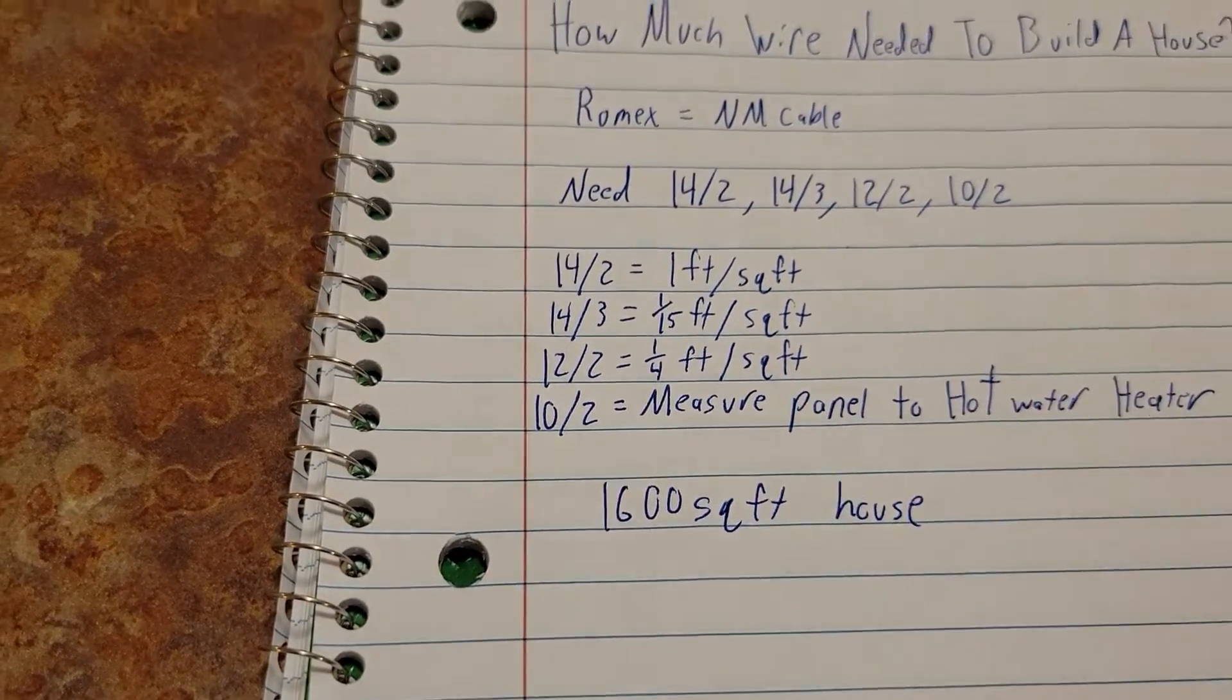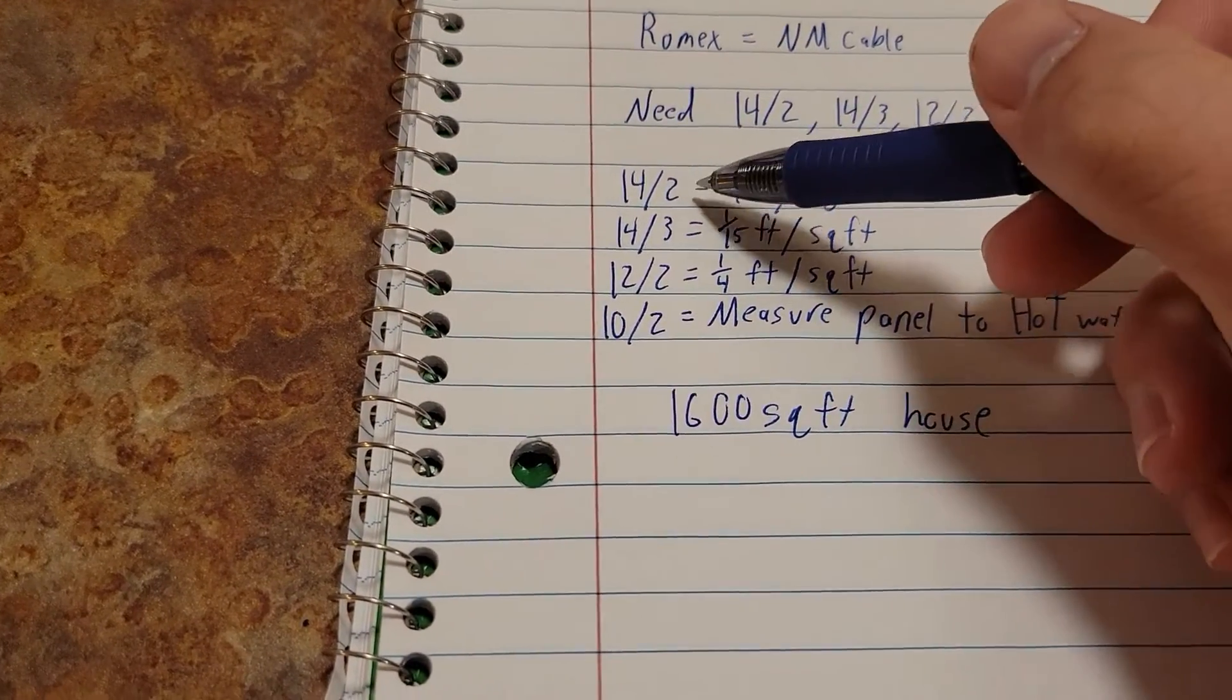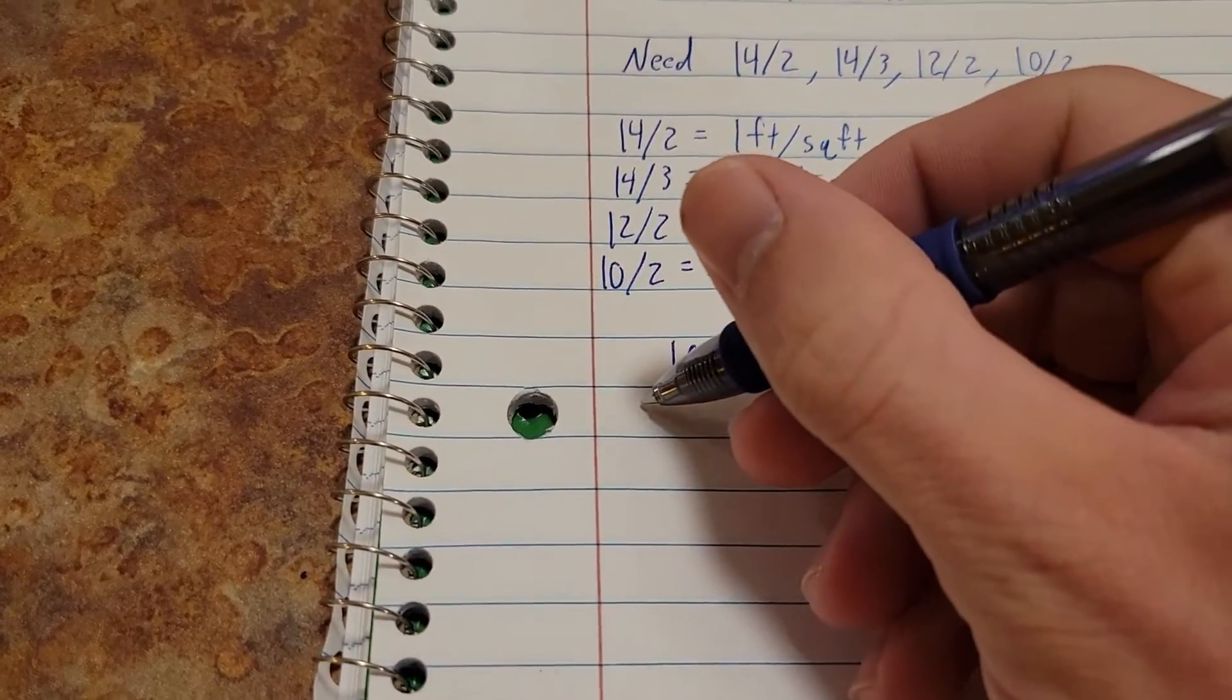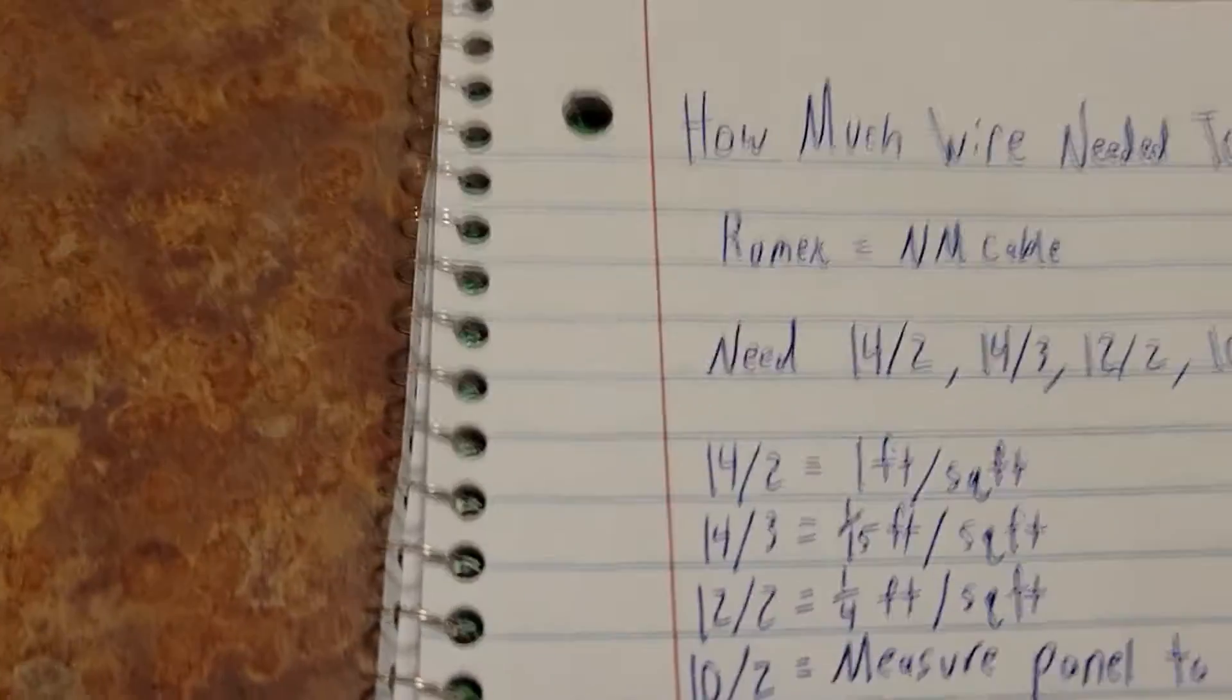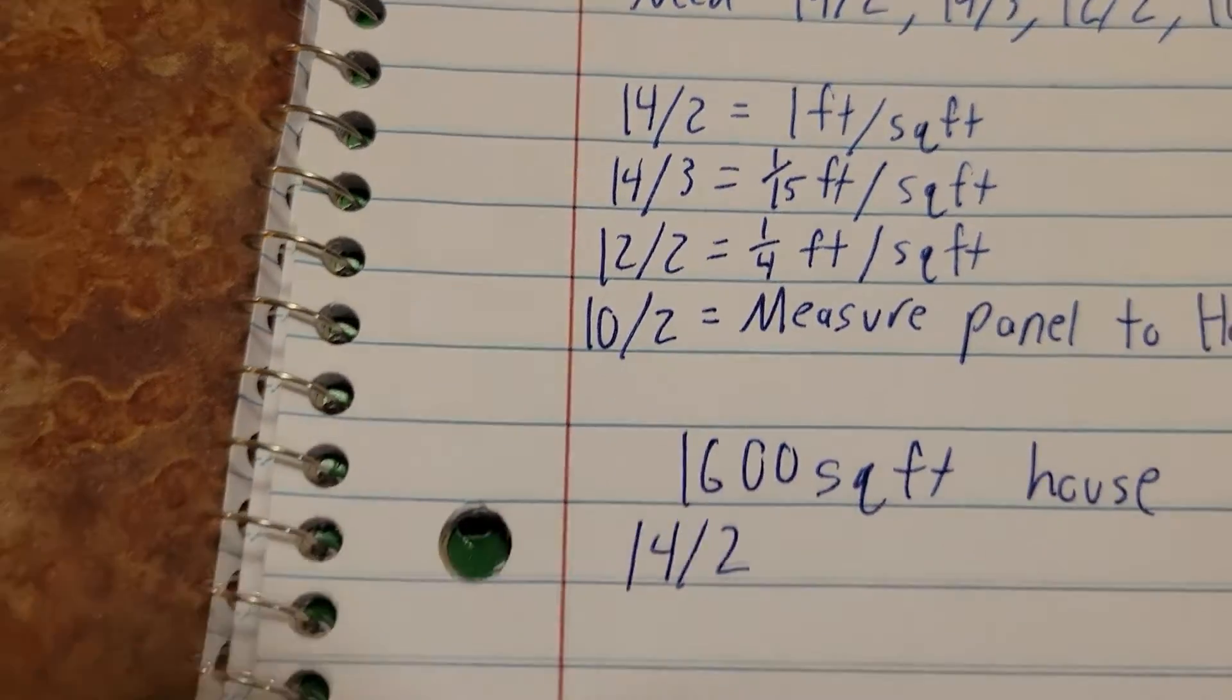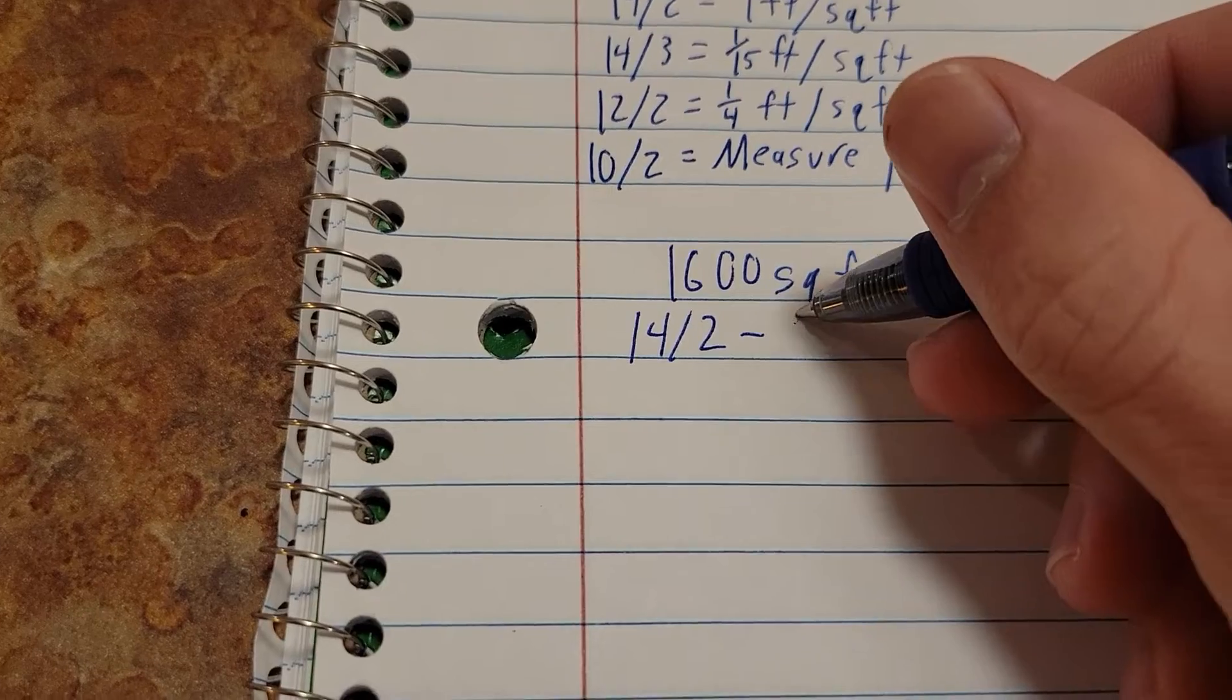So first we're going to do our 14/2. 14/2 is one foot per square foot, so that's easy. We're going to multiply 1600 times one and that leaves us needing 1600 feet of 14/2.